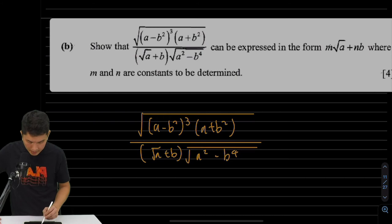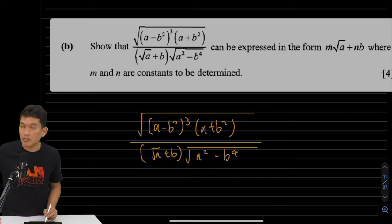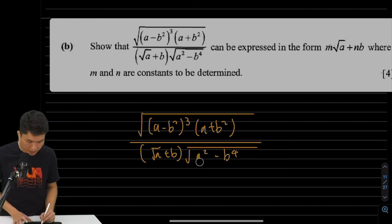Now, I copied down the exact expression over here. And what I'm going to change, actually, is the term over here in the square root in the denominator. A square minus B to the power of 4. This is actually the same as the difference of two squares. Like, A square minus B square is A plus B, A minus B. This will be A minus B square times A plus B square. So let's rewrite that.